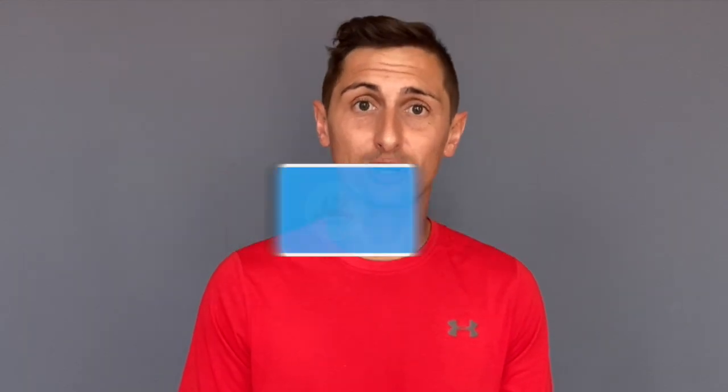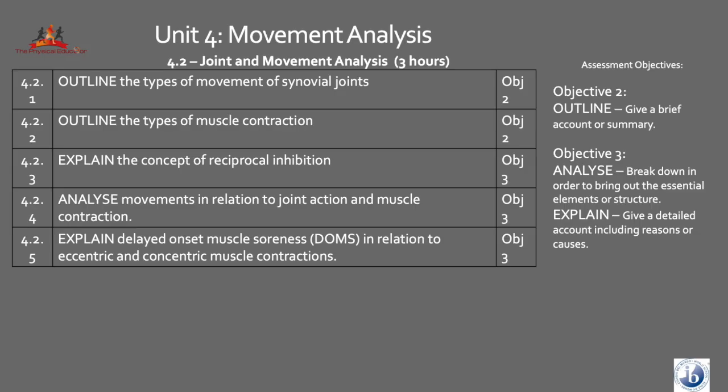Joint and movement type — let's have a look at the syllabus outline first. There are only five objective points in this unit. The first two require you to go into brief detail above identification, covering types of muscular contraction and types of movements. The last three topic points are looking for more detail, so make sure you pay attention as we go through the explanations and analysis required.